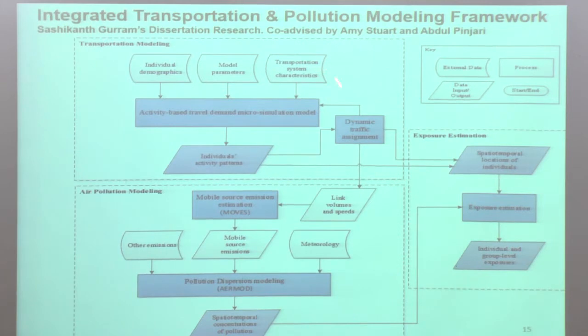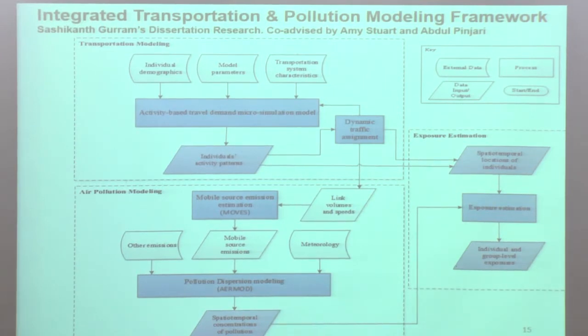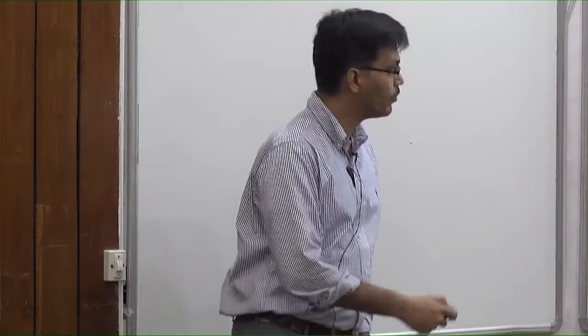What I showed before is the transport modeling aspect where the travel demand and supply models are combined together, which in turn feed into pollution models for modeling emissions from vehicles. This also includes modeling the fate of those emissions based on meteorology and other information into dispersions of those pollutants, all coming together along with the travel patterns and space-time movement of people into exposures of people to those pollutants. So we are bringing together transport modeling, pollution modeling, and exposure estimation for a variety of purposes.